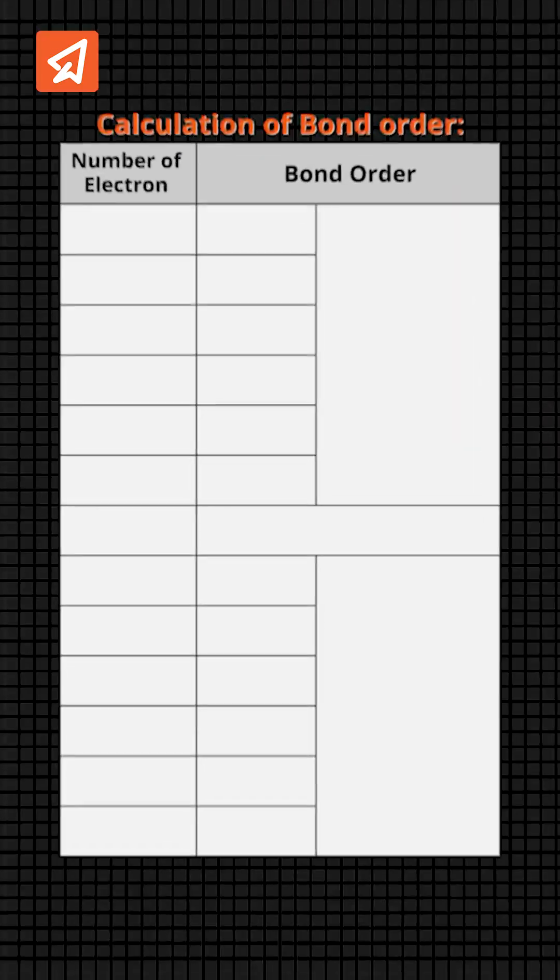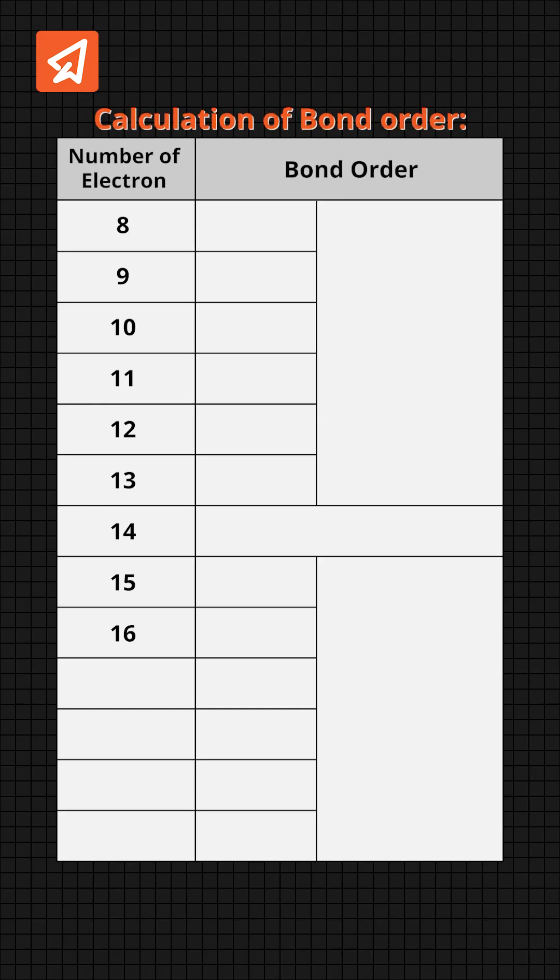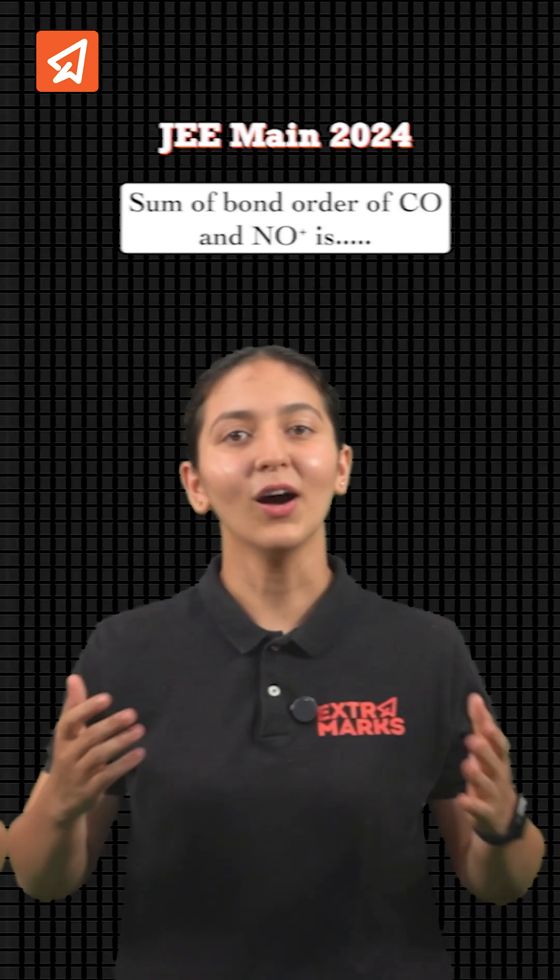They follow this trick: Write the electron count from 8 to 20, and in the second row, write the bond order for 14 electron count as 3. As you keep moving from 14 to 8 electron count, you have to subtract 0.5 from the previous bond order. And as you keep moving from 14 to 20 electron count, subtract 0.5 from the previous bond order. This is the only table that you need to remember.